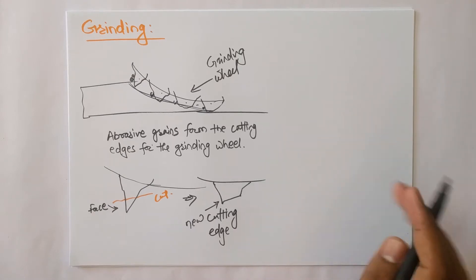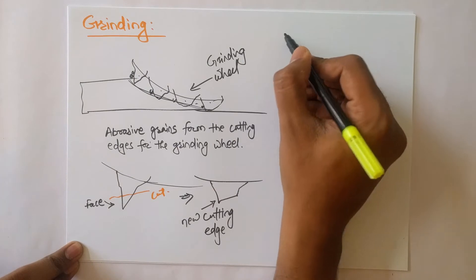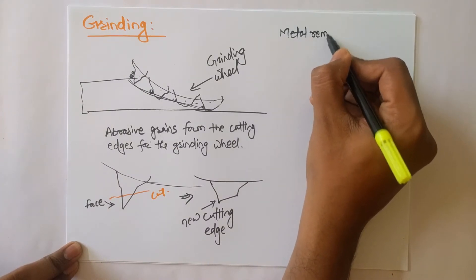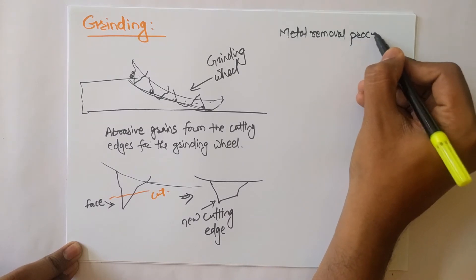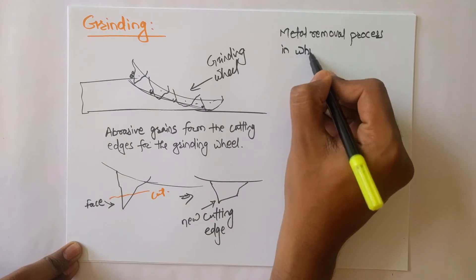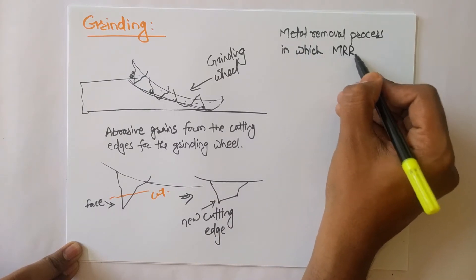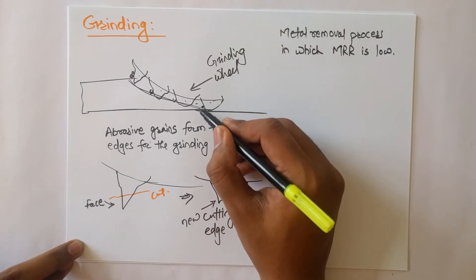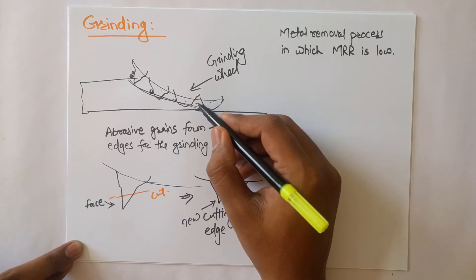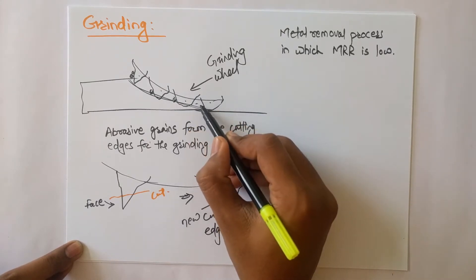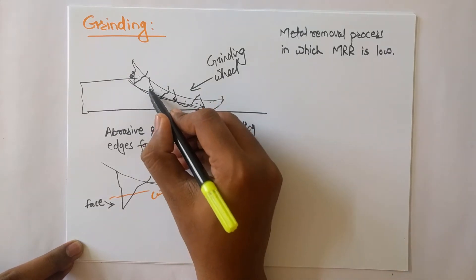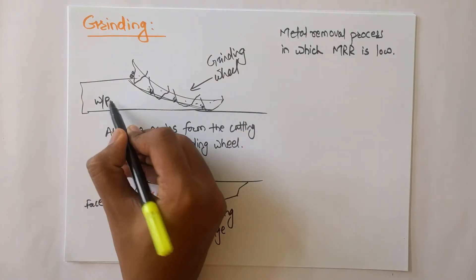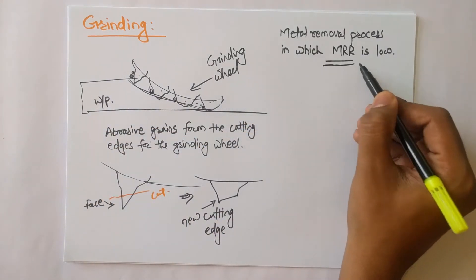Basically, the grinding process is a metal removal process in which the metal removal rate (MRR) is low. Very less material is ground off or taken out from the workpiece material. Here is a macroscopic view of the grinding wheel — very less material is being taken out from the workpiece. MRR is very low.